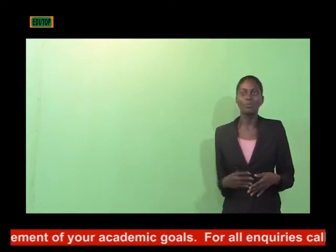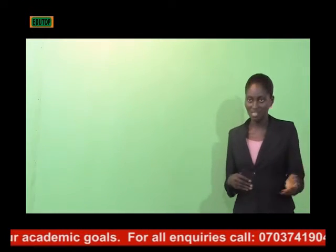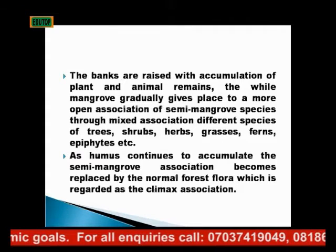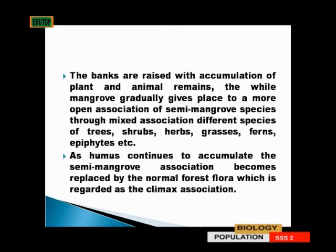The bands are raised with accumulation of plants and animal remains, while the white mangrove gradually gives place to a more open association of semi-mangrove species. Now there is association between the mangrove with trees, shrubs, herbs, grasses, ferns, and epiphytes.